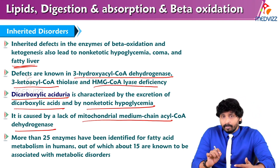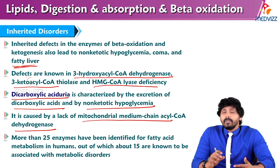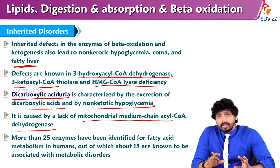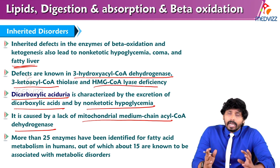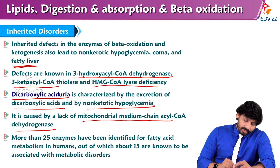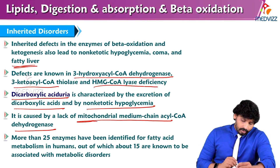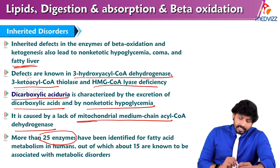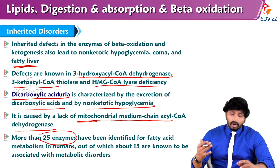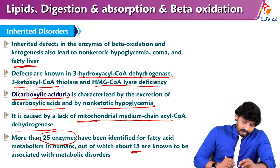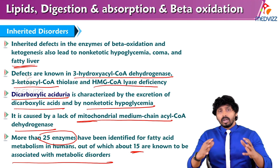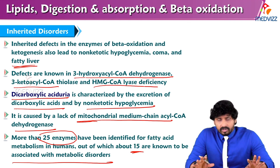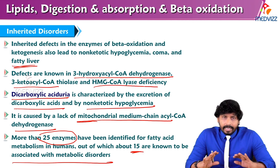This is very important in children. Because of lack of this enzyme, sudden infant death syndrome (SIDS) can occur. The baby may be fine in the evening and night, but all of a sudden in the morning it will be found dead — due to deficiency of mitochondrial medium chain acyl-CoA dehydrogenase. So far, more than 25 enzymes have been identified for fatty acid metabolism in humans, out of which 15 are associated with metabolic disorders. That's all about odd chain fatty acid oxidation, omega oxidation, alpha oxidation, and inherited disorders of fatty acid degradation.